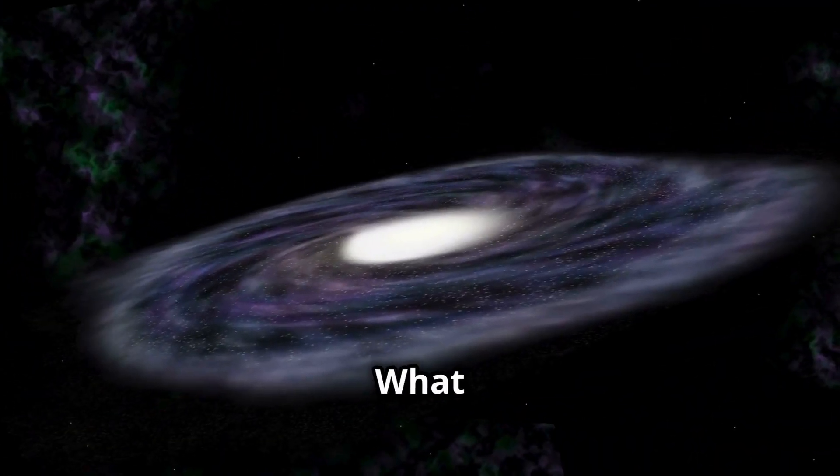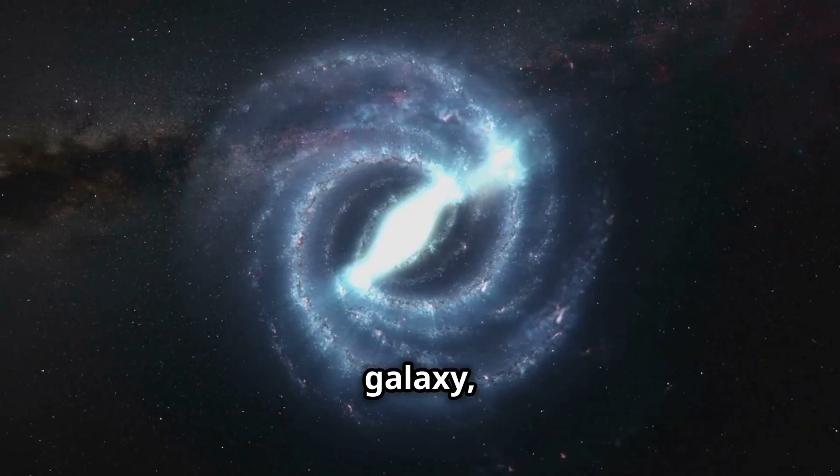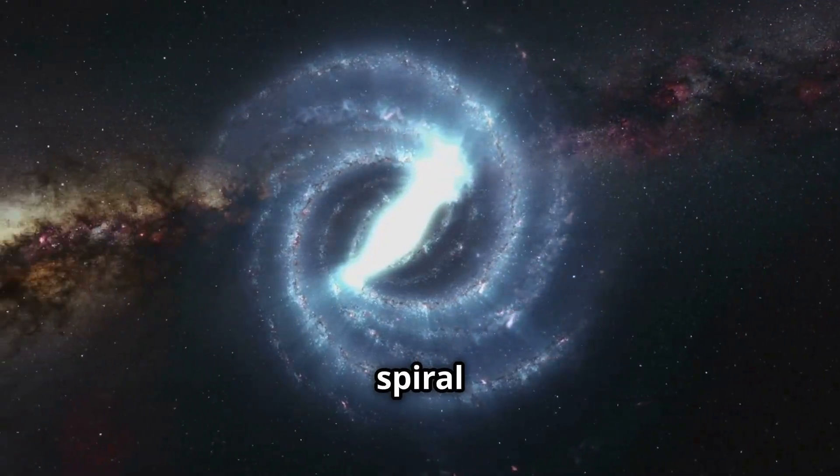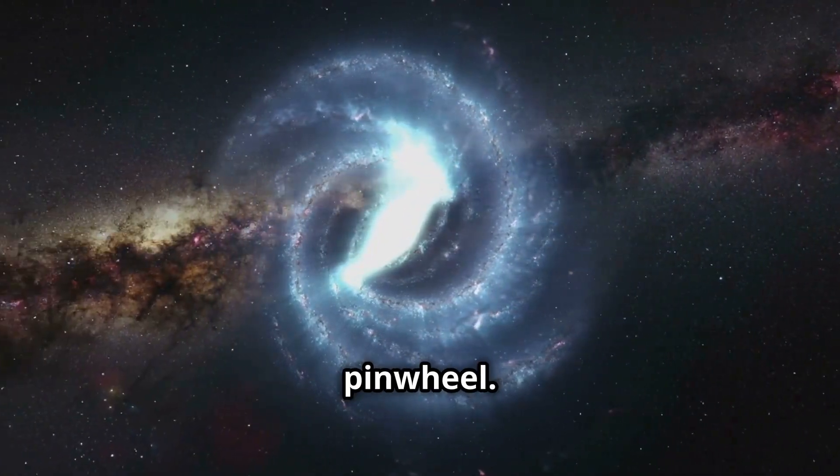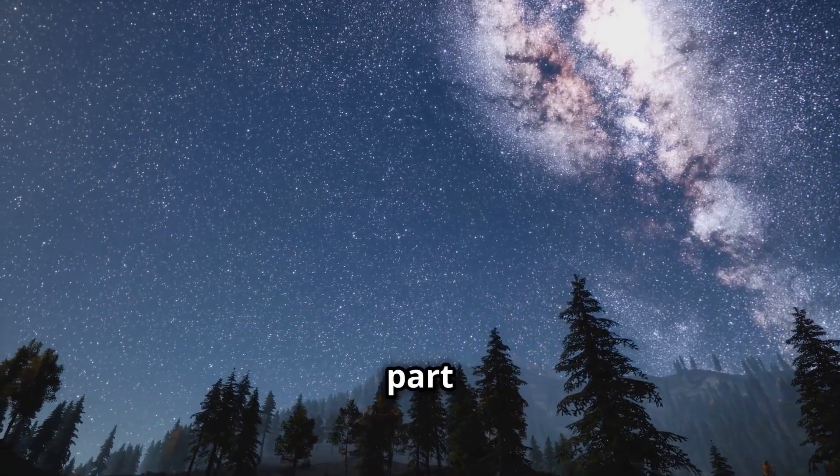Chapter 3. What do we call our galaxy? Our galaxy is called the Milky Way. It's a spiral galaxy, which means it has a flat, rotating disc with a bright center and spiral arms that stretch out like a pinwheel. The Milky Way is home to billions of stars, and our solar system is just one tiny part of it.